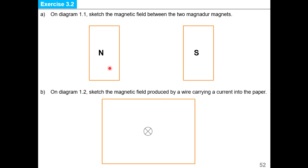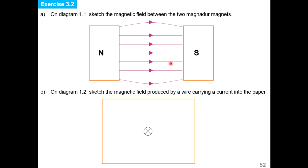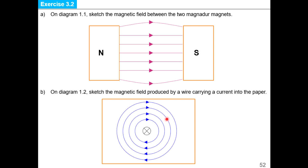Let us do some exercises. On this diagram, sketch the magnetic field between two magnets. We have north and south poles, so draw parallel magnetic field lines with equal spacing, directed from north to south. Then on the next diagram, draw the magnetic field produced by a wire carrying current into the paper (symbol X). The pattern is circular. Using the right-hand grip rule with the thumb pointing inward, the four fingers follow the magnetic field — which is in the clockwise direction. Make sure field lines do not intersect.